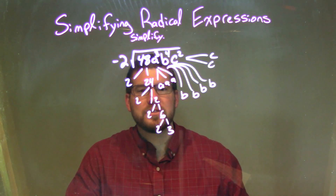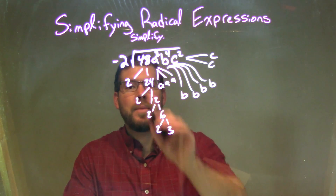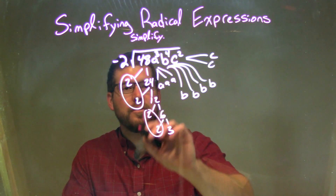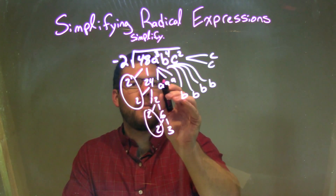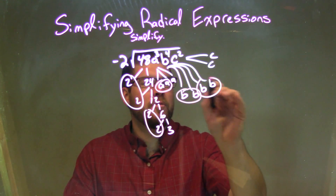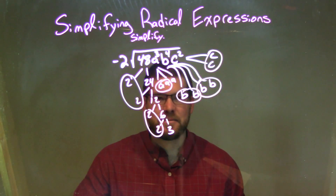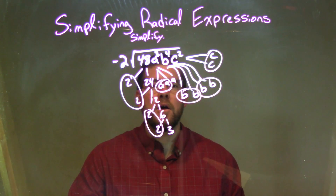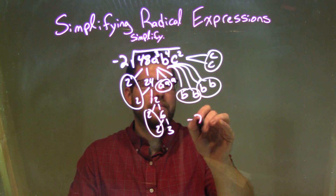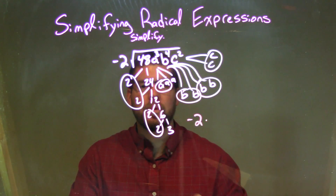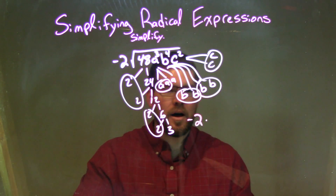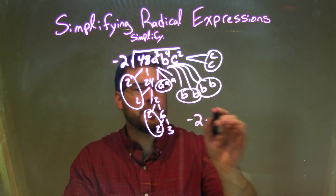So what I'm going to do now is circle all of my pairs. I have a pair of twos right here, and another pair of twos. I have a pair of a's, I have a pair of b's, a second pair of b's, and a pair of c's. So I'm going to rewrite the negative 2 on the outside and multiply by all my pairs, each represented by a single element outside the square root.